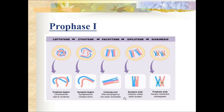During diplotene stage, each individual chromosome of the bivalent begins to split longitudinally into two similar chromatids. The homologous chromosomes repel each other and separate, and chiasmata begin to move along the length of the chromosome from the centromere towards the end - this is called terminalization. During diakinesis, the paired chromosomes are shortened and thickened, the nuclear membrane and nucleolus disappear, and spindle fibers appear.